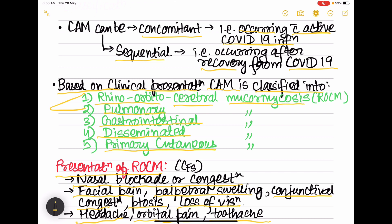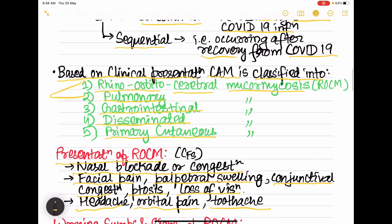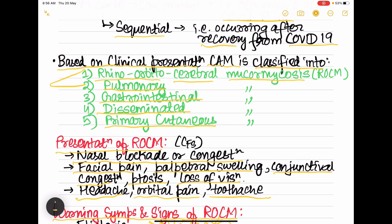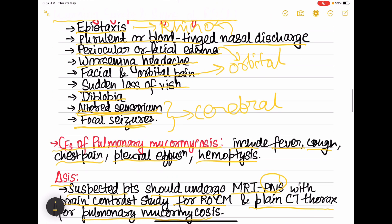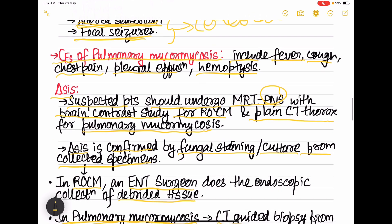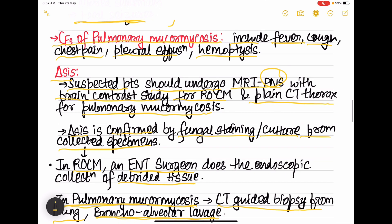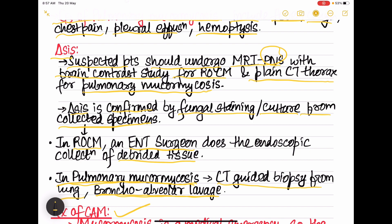ROCM presents with nasal blockade, nasal congestion, purulent or bloody nasal discharge, epistaxis, orbital pain, ptosis, conjunctival congestion, headache, worsening headache, altered sensorium, focal seizures, and sudden loss of vision. Pulmonary mucormycosis presents with cough, fever, chest pain, pleural effusion, and haemoptysis. Diagnosis: MRI of paranasal sinuses with brain contrast study for ROCM; plain CT thorax for pulmonary type. Confirmed by fungal culture and staining, with specimens obtained endoscopically or by bronchoalveolar lavage.